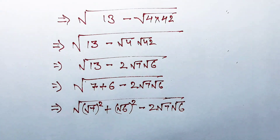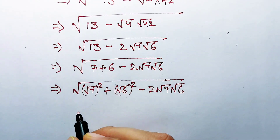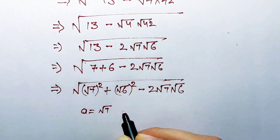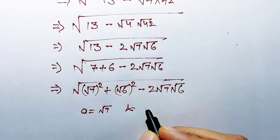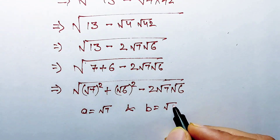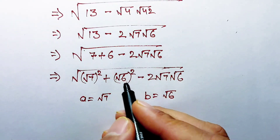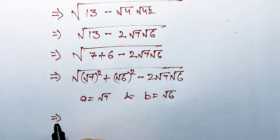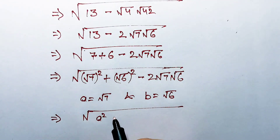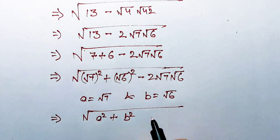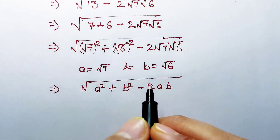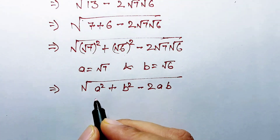Now if I take a equal to square root of 7 and b equal to square root of 6, and putting this value into the expression, what I get is a squared plus b squared minus 2 multiplying a multiplying b.